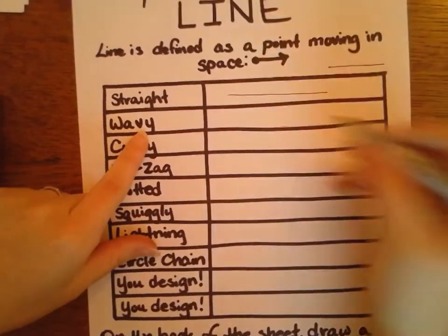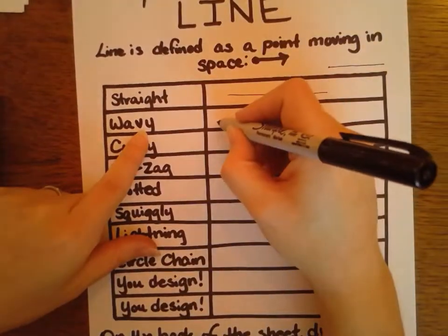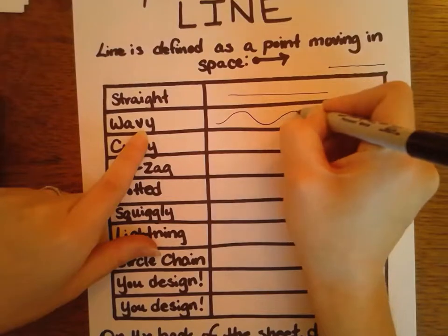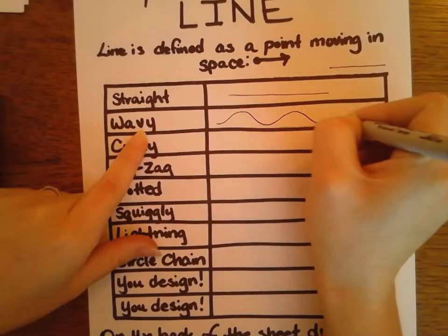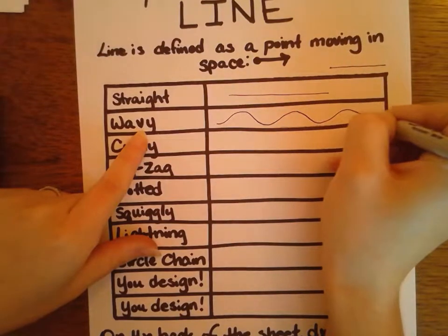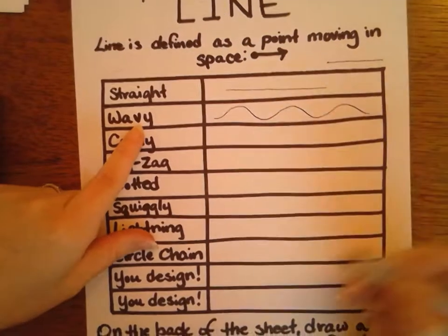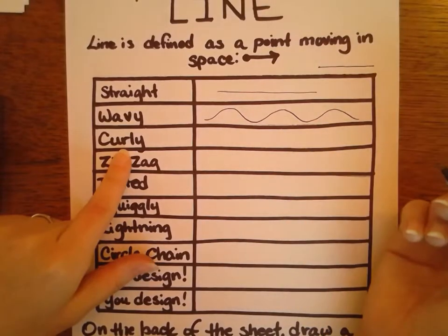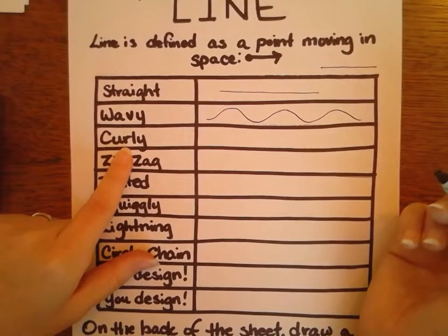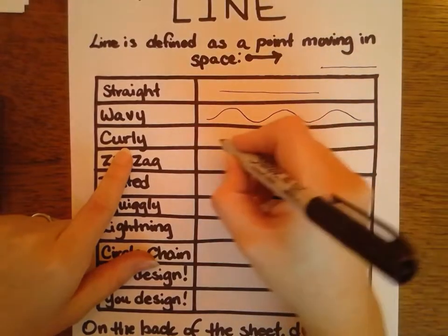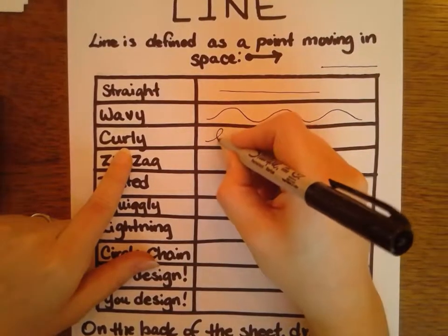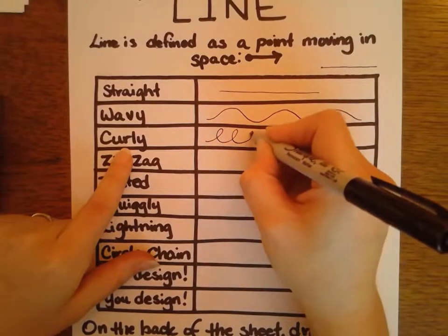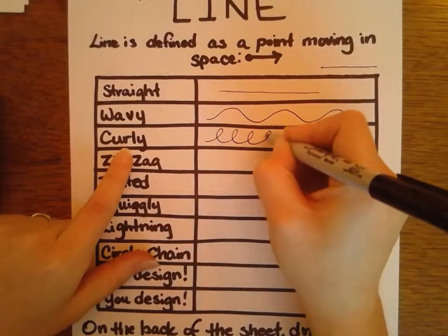I do a wavy — it kind of looks up and down. Curly: if I was going to draw somebody's curly hair, those would be those loop-de-loops. Take your time on them and try to make them look nice.